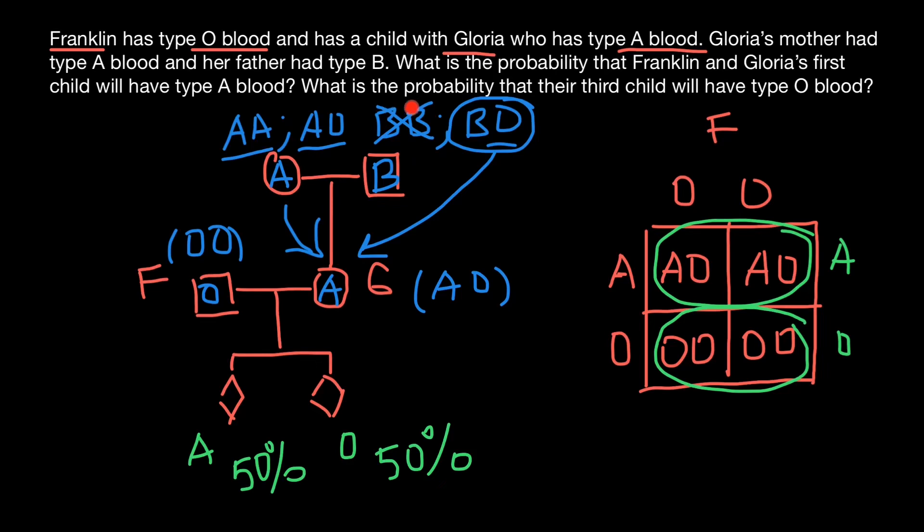And next answer, what is the probability that the third child would have blood type O? And as you see, probability is 50%. But you may also ask what, for example, third child and first child have to do with our calculations. And actually, it doesn't affect our calculations. Every time they would conceive a child, they would have these probabilities to have 50% child with blood group A and 50% with blood group O.